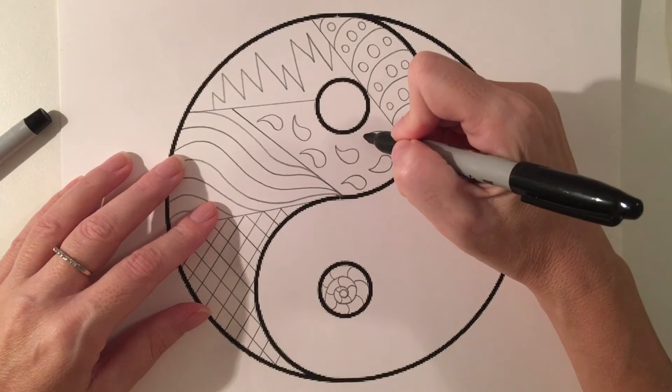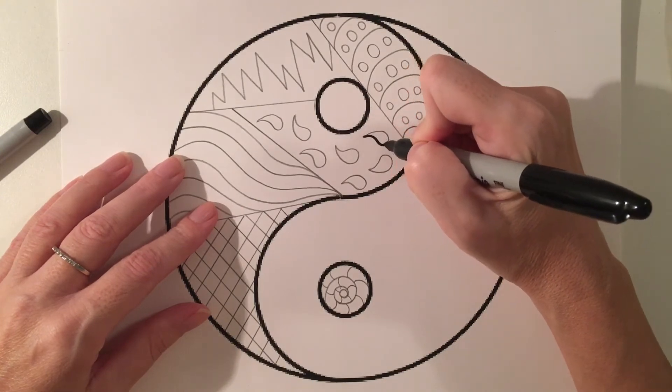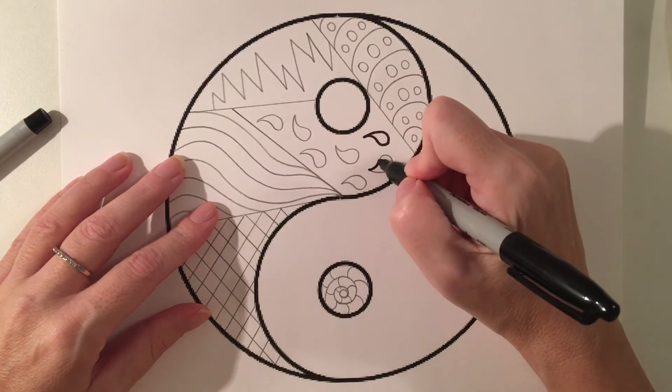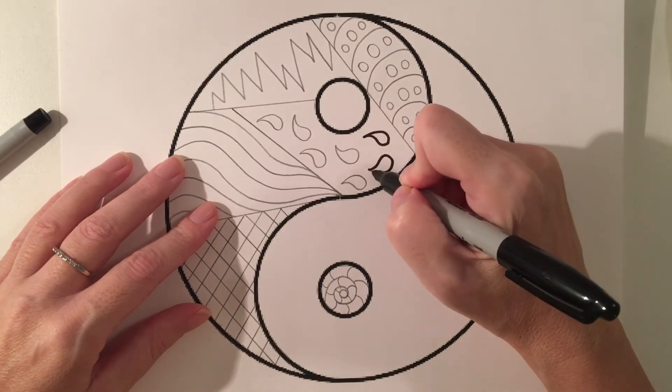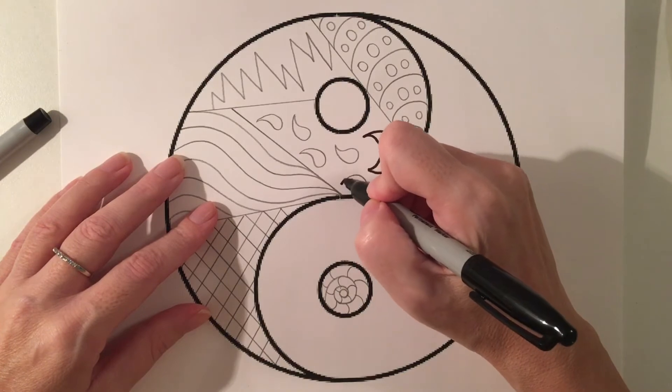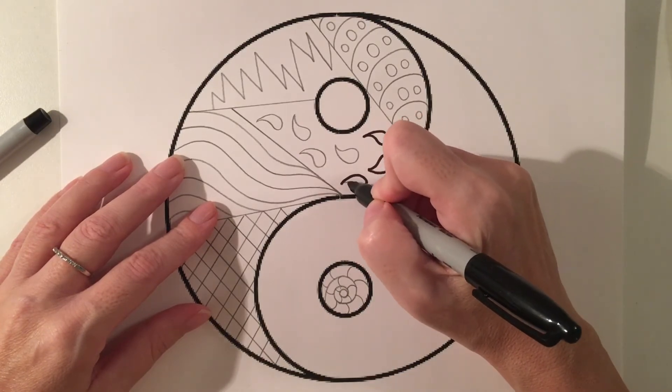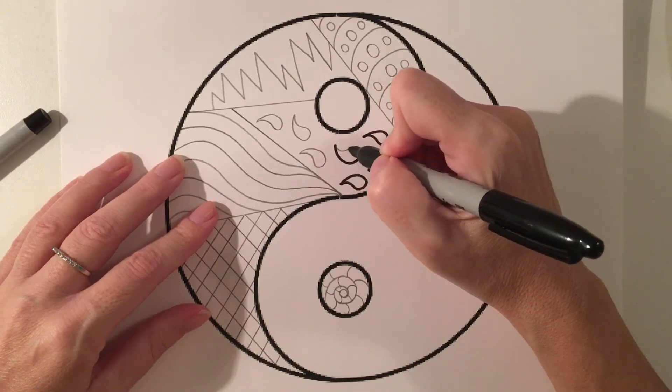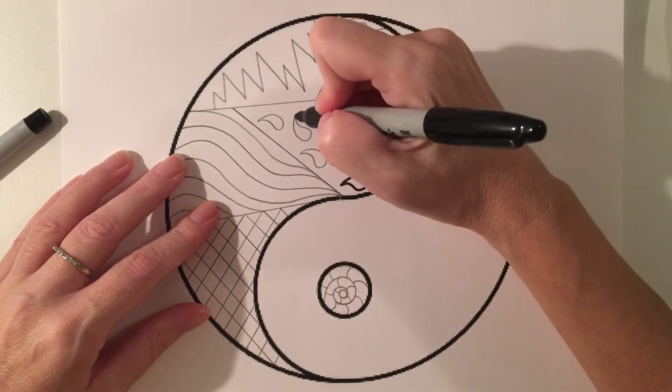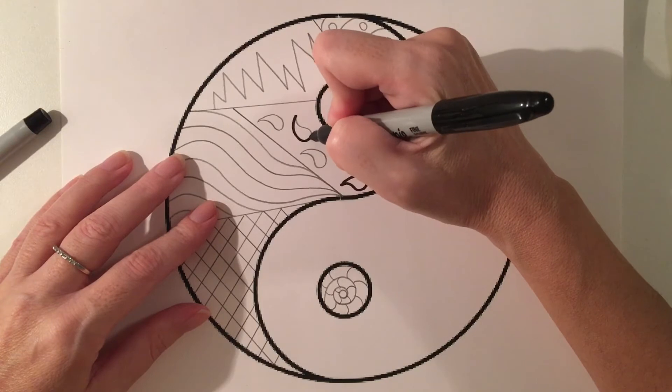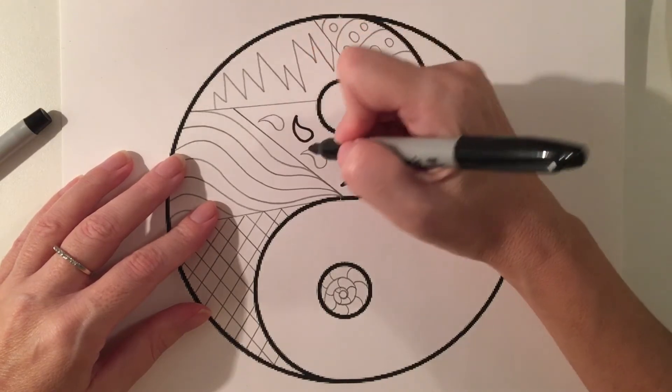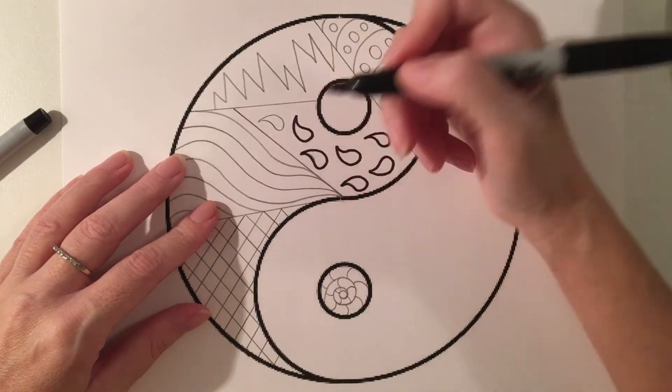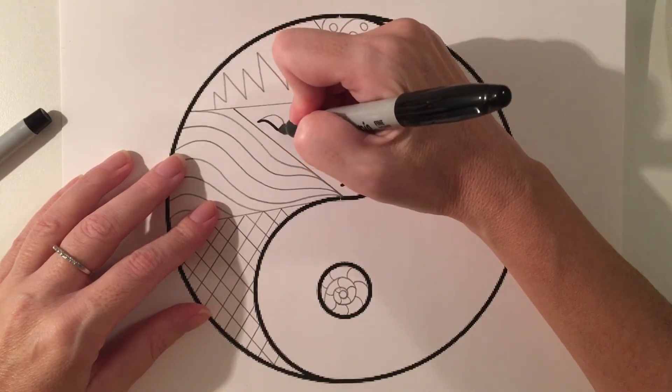If it's something fairly large you can usually outline it really well with your fine point sharpie but if it's something that is small or really detailed then you would want to use your ultra fine point sharpie since it is a thinner mark. So as I'm doing this I'm making sure to follow my pencil lines really well so that I have a nice clean and crisp outline.